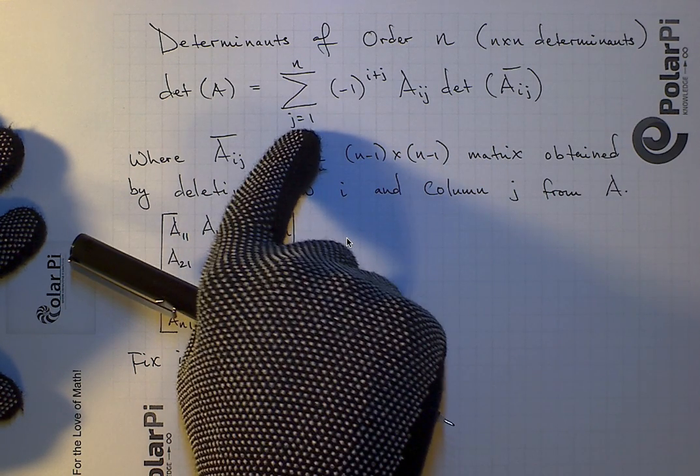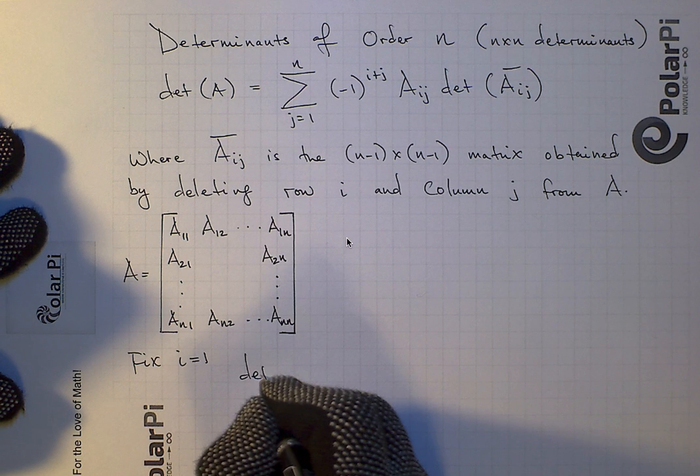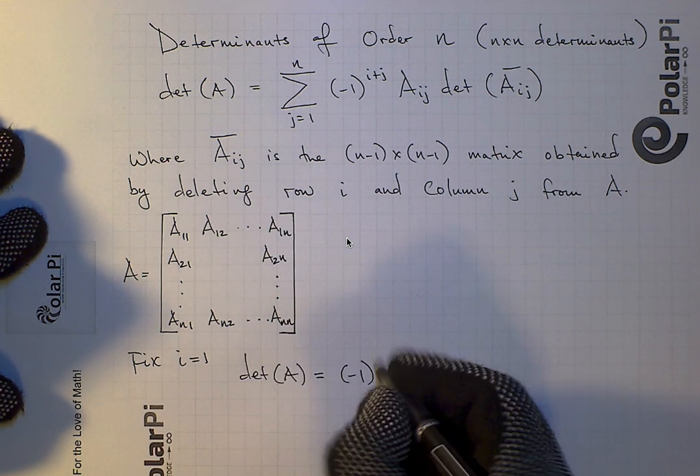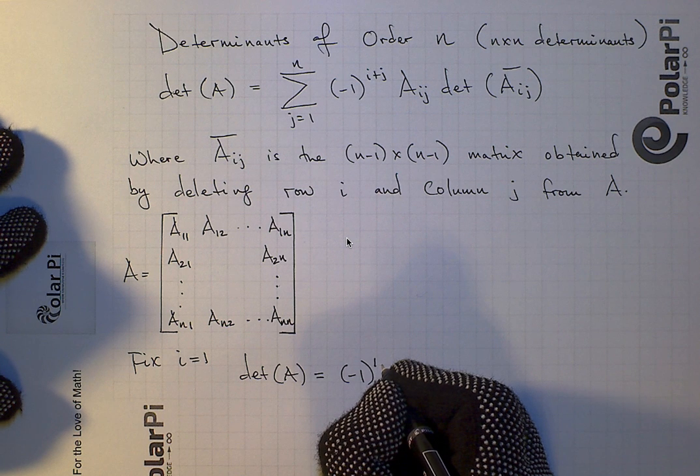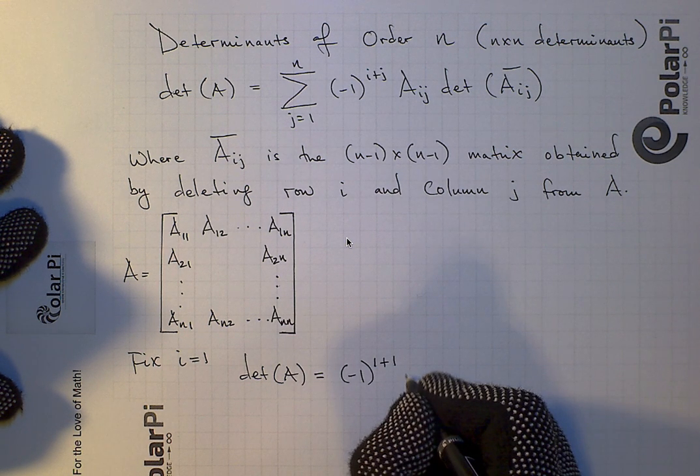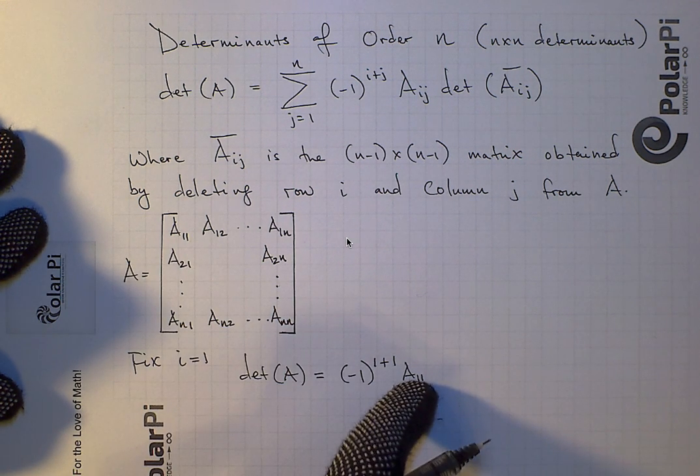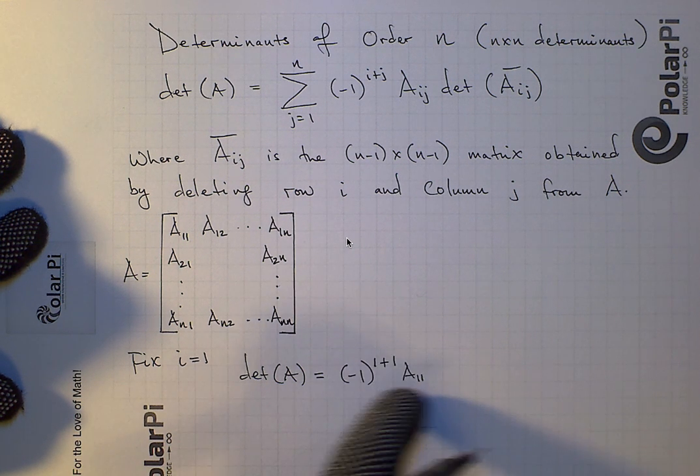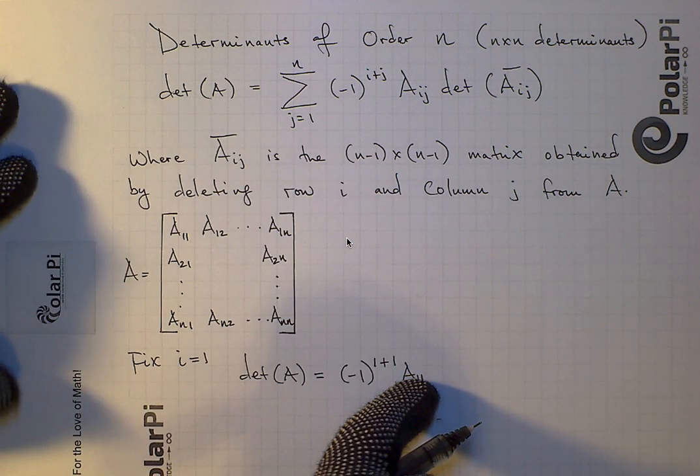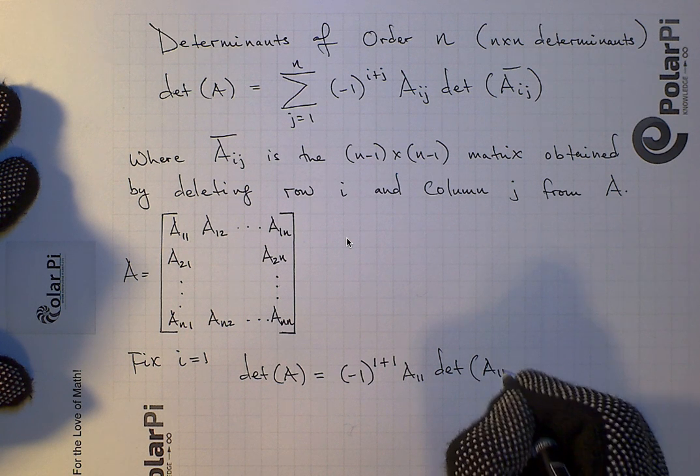And we're adding over j. So we start with the fact that determinant of A, according to this definition, would have us write negative one. I fixed i to equal one. So negative one to the one plus, well, j starts with one. So one plus one. And then it's aij, both i and j are one and one here. So a11. So this is just the entry a11. So whatever number a11 is, that's what we multiply negative one to the second power with. We have negative one to the second times whatever the entry a11 is. And then what? Times...